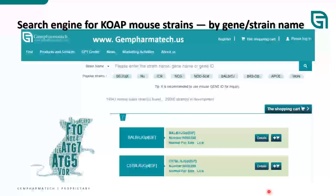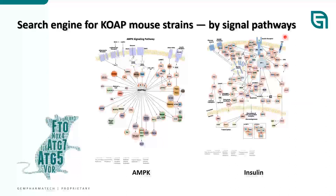We have developed search engines for customers and collaborators to find strains relevant to their research. Searches can be performed by strain or gene name, or by signaling pathway in our own curated system — for example, the AMPK pathway or insulin pathway — where every gene has a link to the corresponding strain product page. About half of products are off-the-shelf and can be delivered in three to four months.